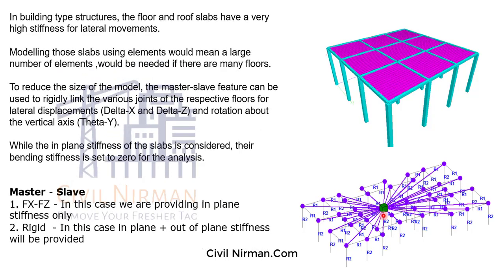While giving the master-slave command, we need to create additional nodes at the center of gravity (CG) of each floor. This node will be assigned as the master node, and the other nodes will be assigned as slave nodes. Slave directions should be in the same plane — in STAAD, that is the XZ plane.